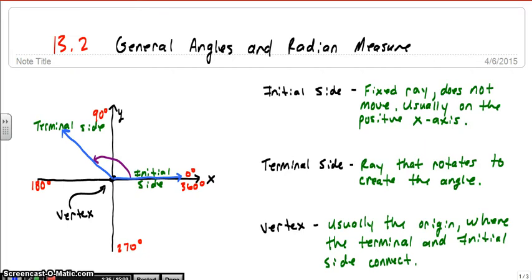So the terminal side is the side that rotates. The initial side is the side that stays the same. And the vertex for our purpose is going to be the origin, where the terminal and initial side connect to make the angle. So remember, they're both rays. They go on forever in one direction.